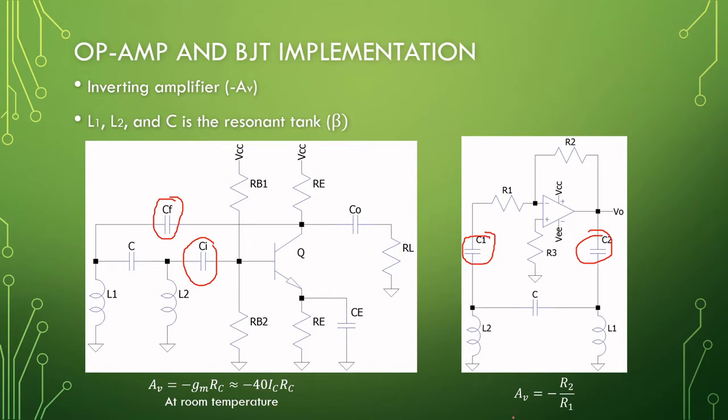This is inverting amplifier configuration, so the gain is just R2 over R1. And this R3 over here is just a parallel combination of R2 and R1, but since R1 is decoupled to the capacitor, R2 should be equal to R3's value.